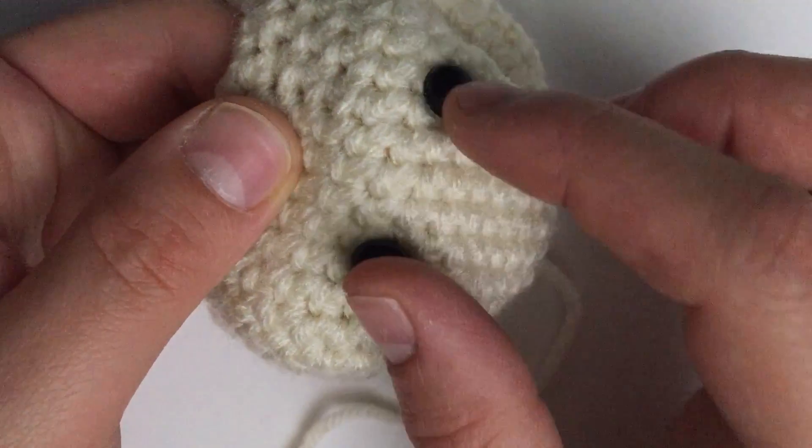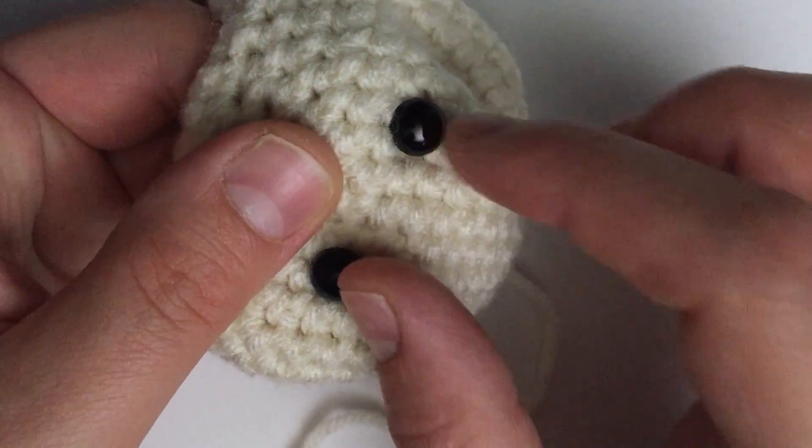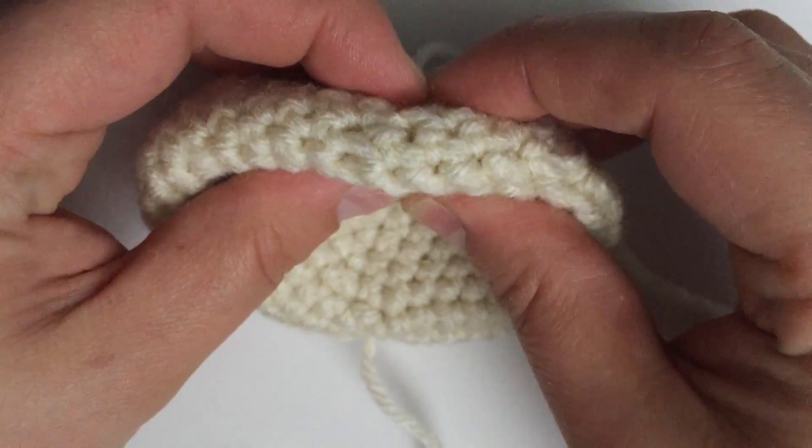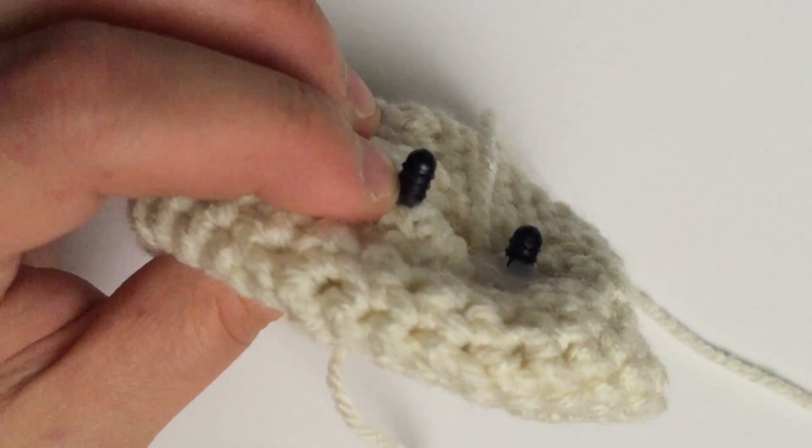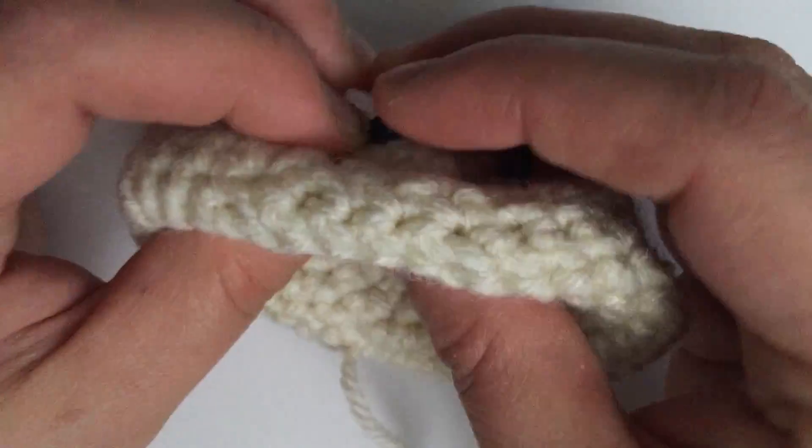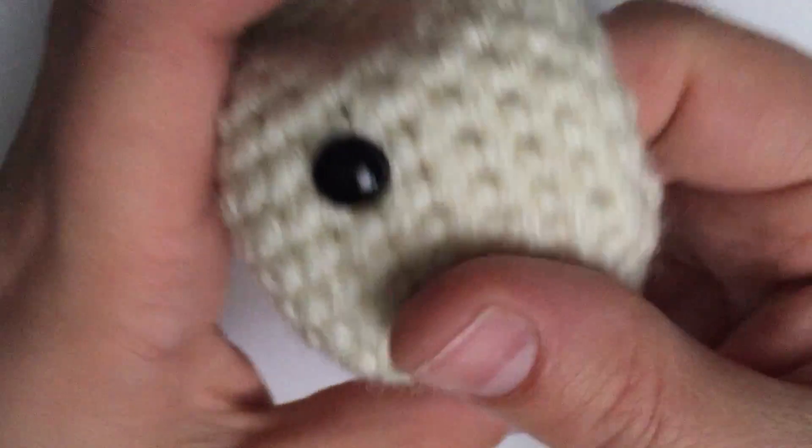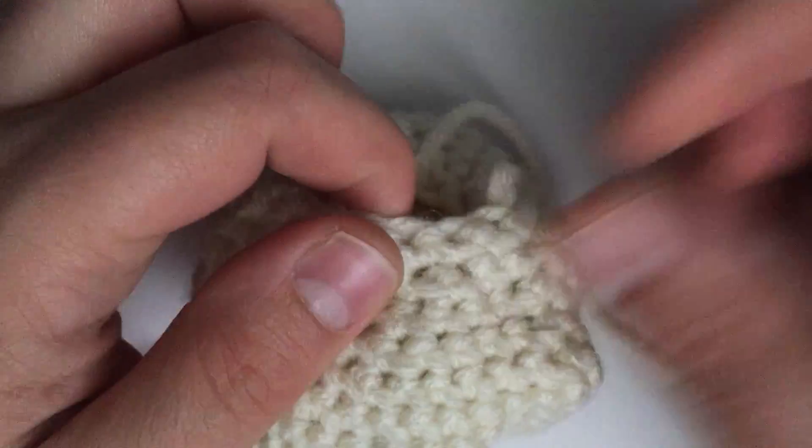So I'm going to put mine here. I'm going to clip the safety clip on the back to keep it in place. You can place the eyes wherever you want on your doll. Now that I have this, I'm going to continue with that single crochet around 12.